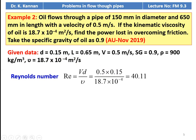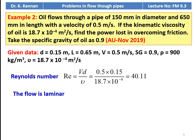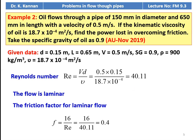First, we calculate the Reynolds number: Re = V × d / ν = 0.5 × 0.15 / (18.7 × 10⁻⁴) = 40.11. Since the Reynolds number is less than 2300, the flow is laminar. The friction factor for laminar flow: f = 16 / Re = 16 / 40.11 = 0.4.